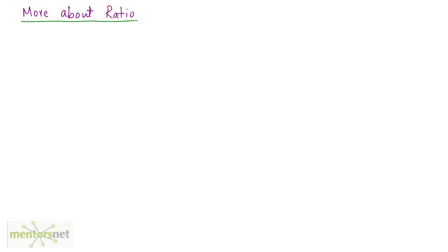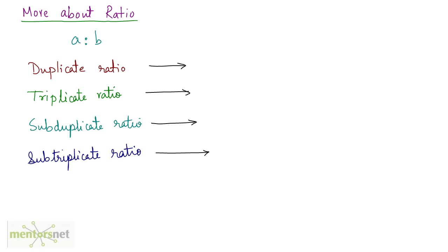Let us talk about some more terms related to ratios that are sometimes asked in examinations. For two numbers a and b, the duplicate ratio is the ratio of their squares: a² is to b². The triplicate ratio is the ratio of their cubes: a³ is to b³.